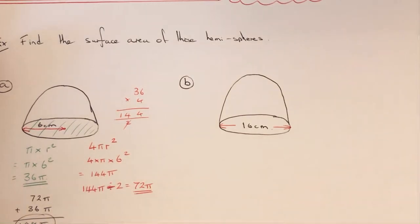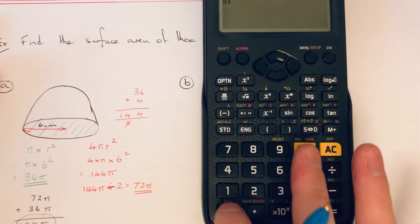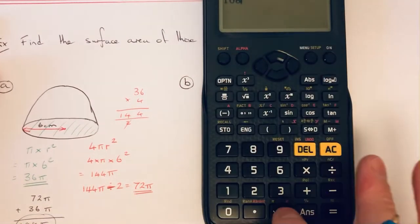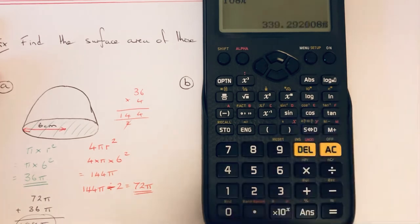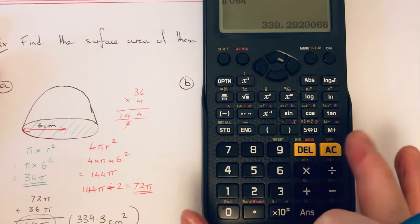So that is the exact answer. If you do want it as a decimal, just type in 108π and SD it. So it would be 339.3, and it will be centimeters squared. So either answer is fine.